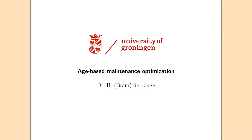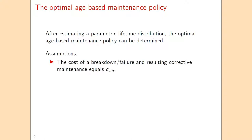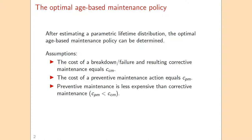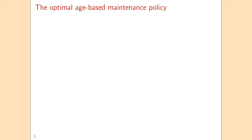This video is about age-based maintenance optimization. If we have a parametric lifetime distribution that provides a good fit to the data, we can determine the optimal maintenance age. We will make the following assumptions. At the moment of failure, we carry out corrective maintenance, and that has a cost of C-CM. We can also carry out preventive maintenance, and that has a cost of C-PM. Preventive maintenance is less expensive than corrective maintenance, because otherwise we would never do preventive maintenance. We also assume that both types of maintenance are perfect, so they both make the unit as good as new again.